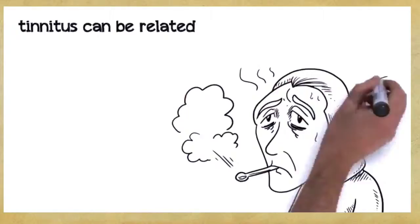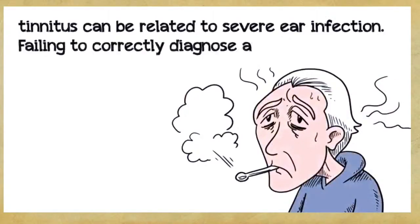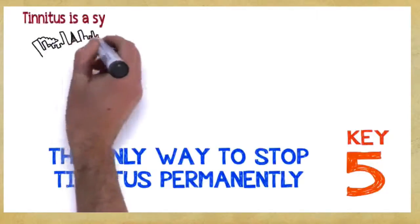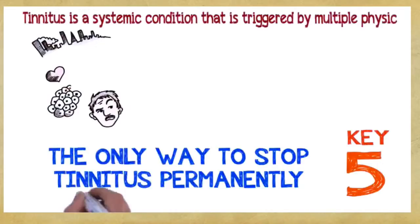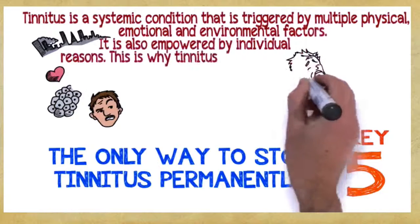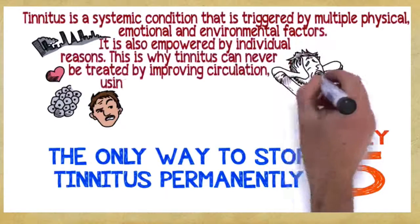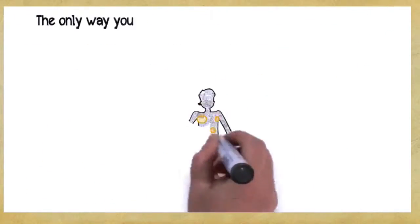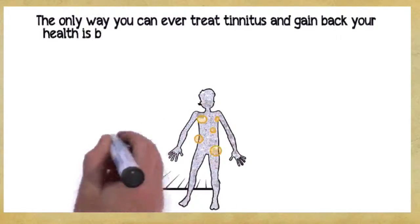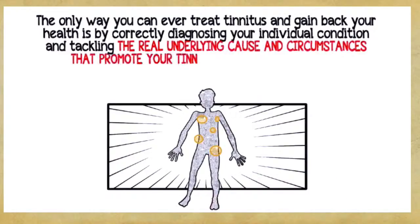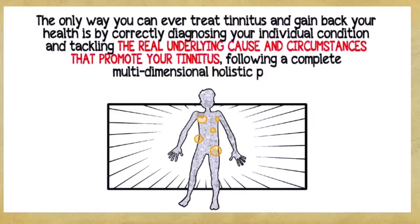For example, tinnitus can be related to severe ear infection. Failing to correctly diagnose and treat infections can often lead to serious long-term health consequences. Key number five: The only way to stop tinnitus permanently. Tinnitus is a systemic condition that is triggered by multiple physical, emotional, and environmental factors. It's also empowered by individual reasons. This is why tinnitus can never be treated by improving circulation, using muscle relaxers, masking the noise, or cutting a nerve in your auditory system. The only way you can ever treat tinnitus and gain back your health is by correctly diagnosing your individual condition and tackling the real underlying cause and circumstances that promote your tinnitus, following a complete, multi-dimensional, holistic program.